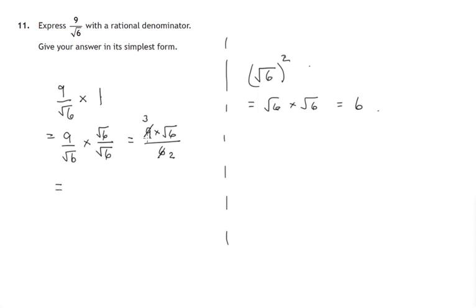So we can simplify this fraction and we're left with 3 times root 6 on the top and 2 on the bottom. And we're asked to give the answer in simplest form. That is the simplest form.